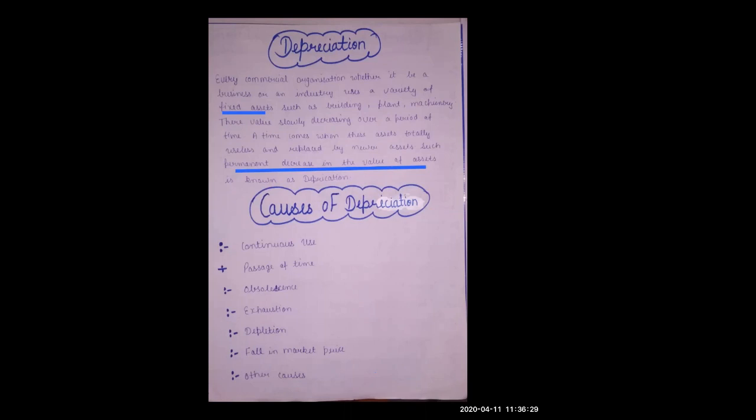The fifth objective is the prevention of capital erosion. If we don't show depreciation, our company's profits will appear higher. If higher profits are distributed to shareholders, it effectively reduces the company's capital.